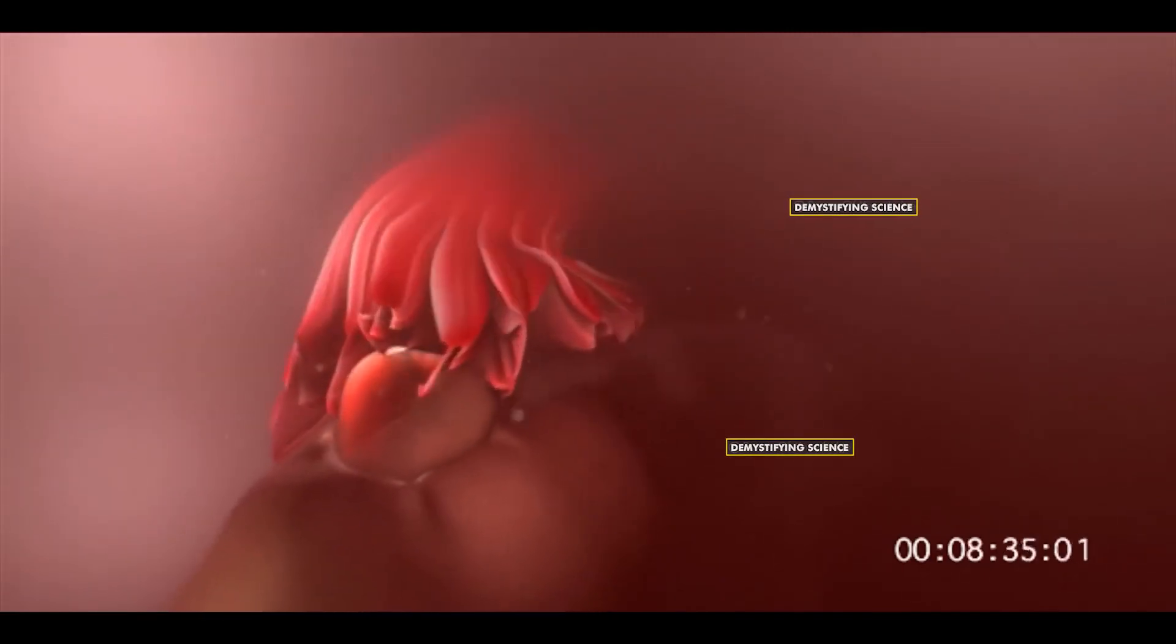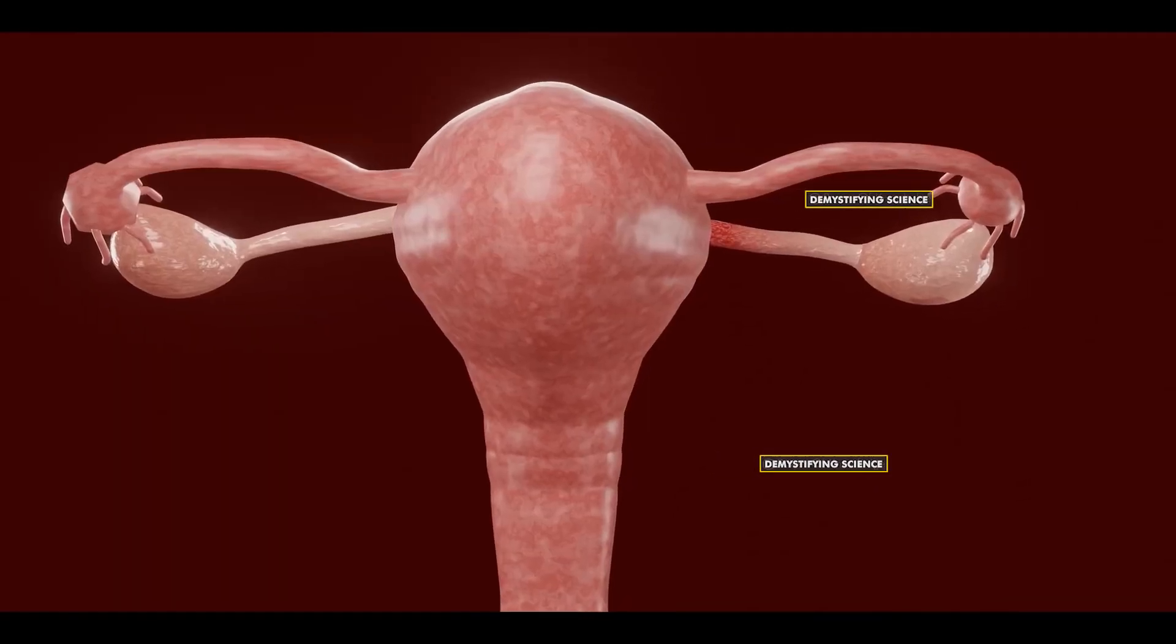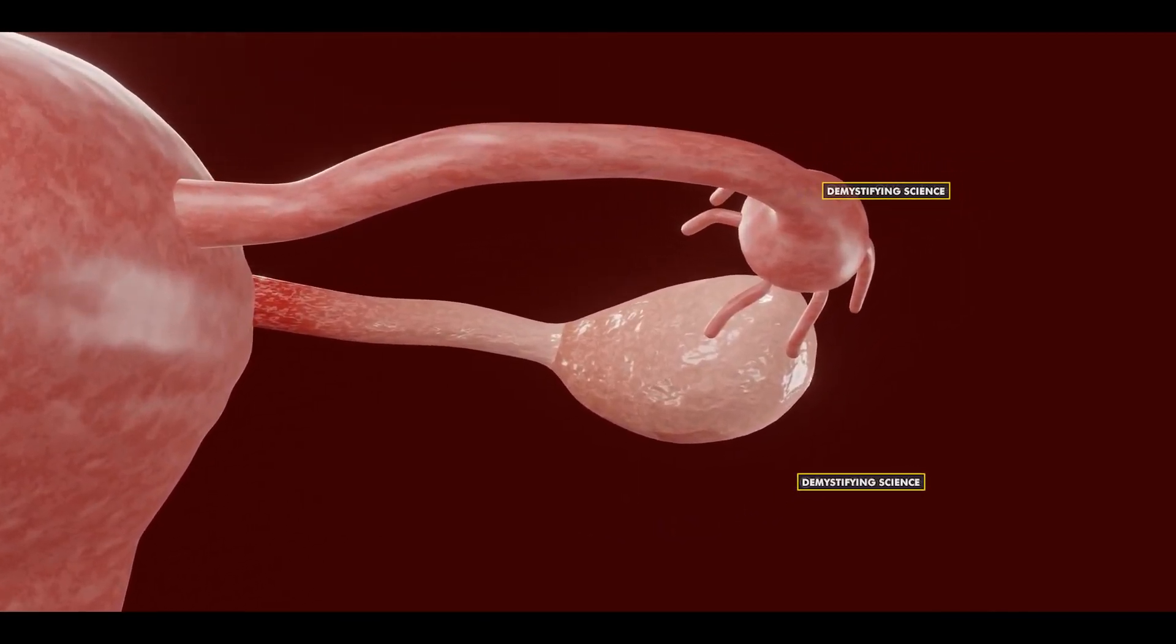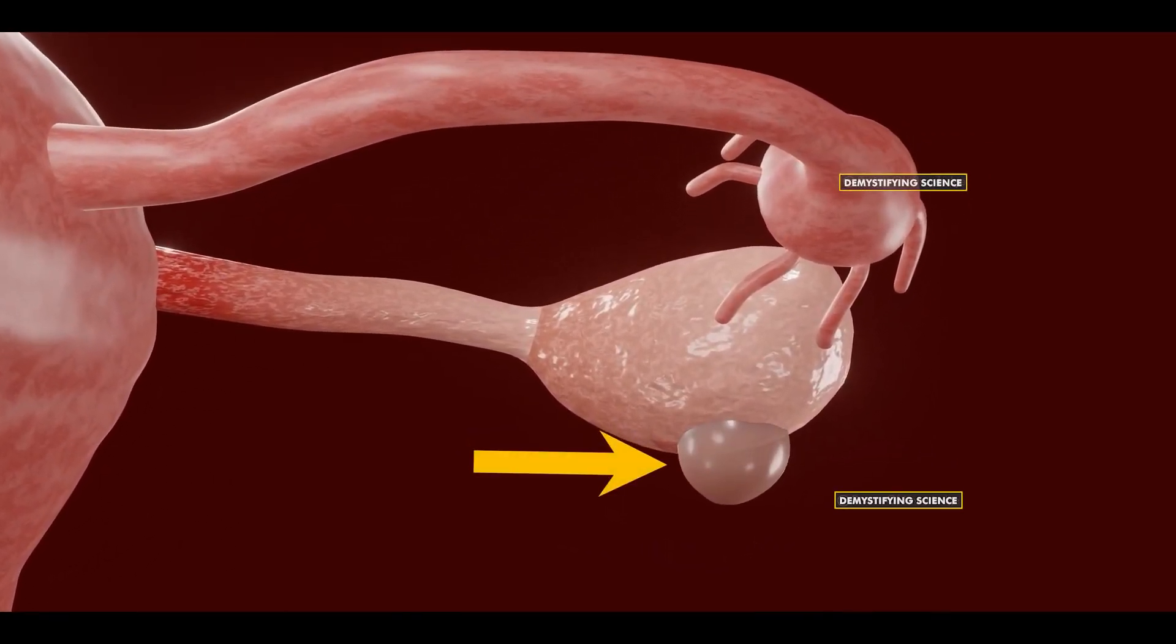On the other hand, if an egg cannot be released from a normal follicle or if the follicle does not disappear after ovulation, it can become filled with fluid and enlarge, forming a sac-like structure called a cyst.